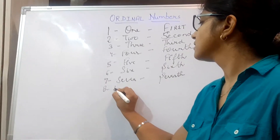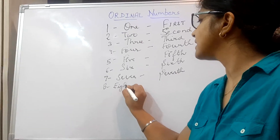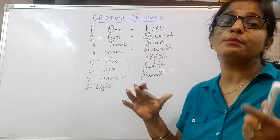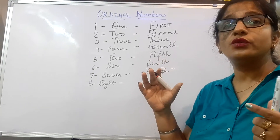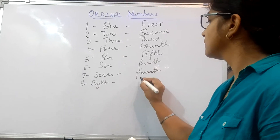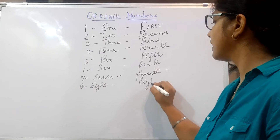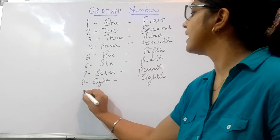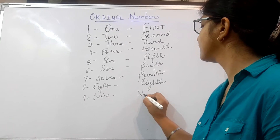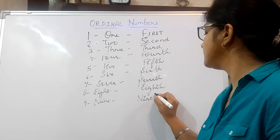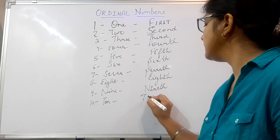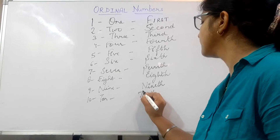For 8, in maths you write 8, but when you want to mention somebody in 8th position, you write 'I am in class 8th' — E-I-G-H-T-H. For 9, we write ninth — N-I-N-E-T-H. And for 10, we write tenth — T-E-N-T-H.